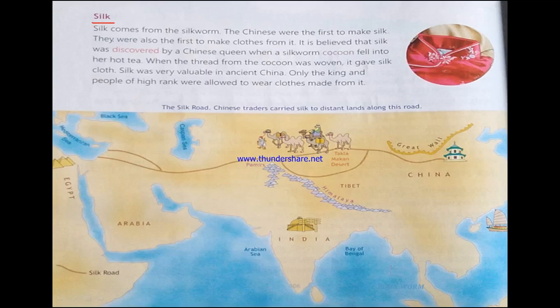Silk comes from the silkworm. The Chinese were the first to make silk and also the first to make clothes from it. It is believed that silk was discovered by a Chinese queen when a silkworm cocoon fell into her hot tea. When the thread from the cocoon was woven, it gave silk cloth. Silk was very valuable in ancient China — only the king and people of high rank were allowed to wear clothes made from it.